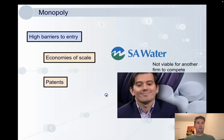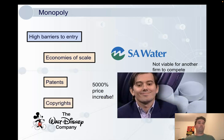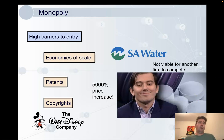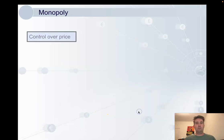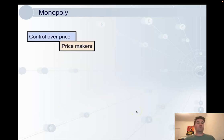Another type of legal barrier is a copyright — it's pretty much the same as a patent. No one apart from Disney is allowed to make a film about Mickey Mouse, so this is clearly a huge barrier to entry as well. And as we saw with the raising of the price, a monopolist has complete control over price. We can consider them price makers, as opposed to price takers in perfect competition.